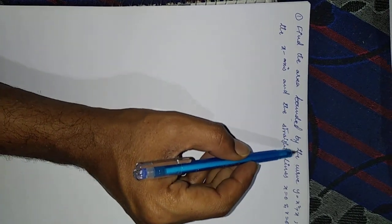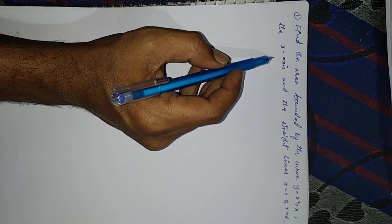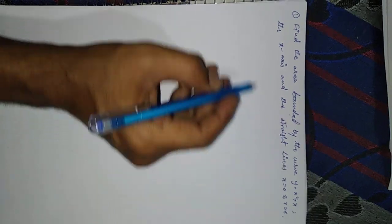Find the area bounded by the curve y equals x squared plus x, the x-axis, and the straight lines x equals 0 and x equals 6.